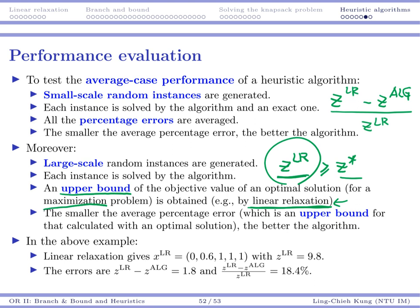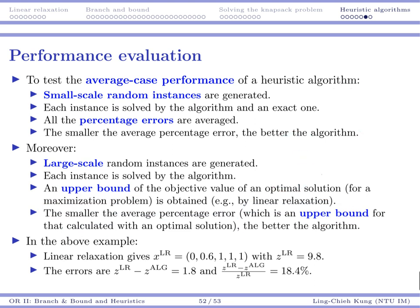You use this to estimate the percentage error, which is the difference between the ZLR, between your upper bound of your optimized objective value with your proposed solution. So in this case, that average percentage error is also actually an upper bound for that calculated with an optimal solution. So here I need to spend a few words to make the thing clearer.